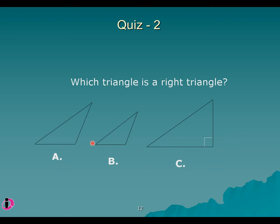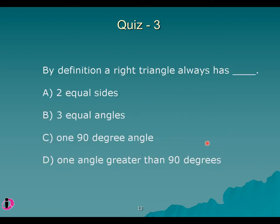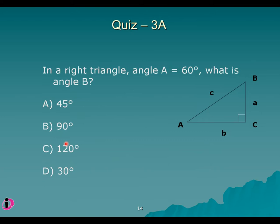Which one is the right triangle? The one where this angle is 90 degrees. By definition, a right triangle has one 90-degree angle. This is the triangle you'll be using a lot when we discuss trigonometric functions. All uppercase letters represent angles — uppercase A means it's an angle, uppercase B is an angle, uppercase C is an angle. All lowercase letters represent sides.